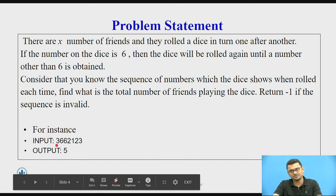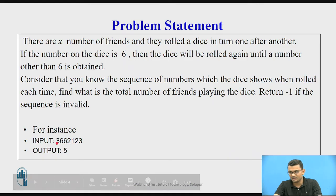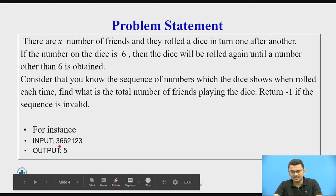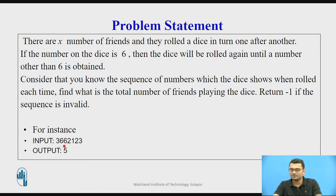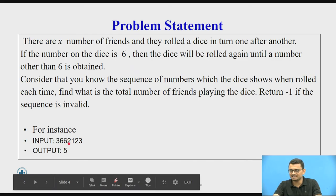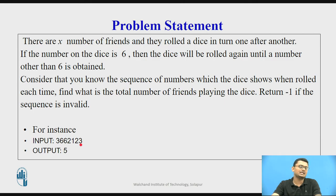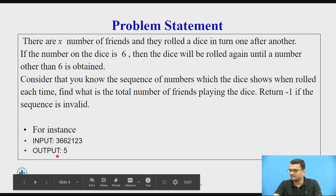From this sequence we understand that the first friend rolled a 3. The second friend rolled three times: the first time it was 6, the second time again 6, and the third time they got 2. The third friend rolled 1, the fourth friend rolled 2, and the fifth friend rolled 3. So from this sequence we determine that the number of friends is 5.